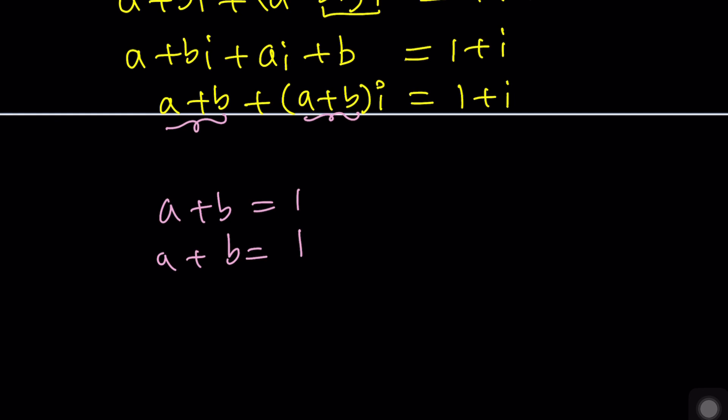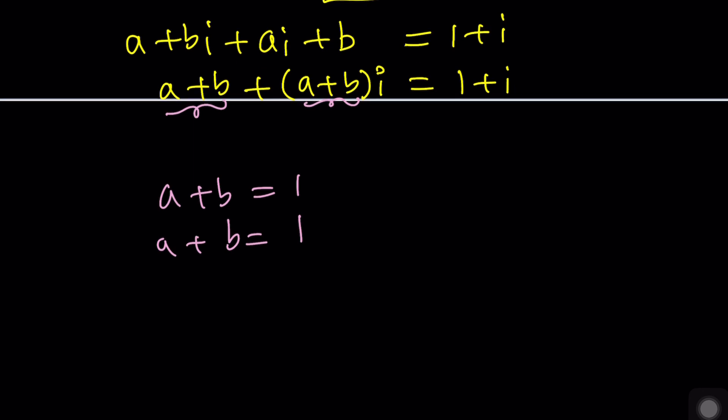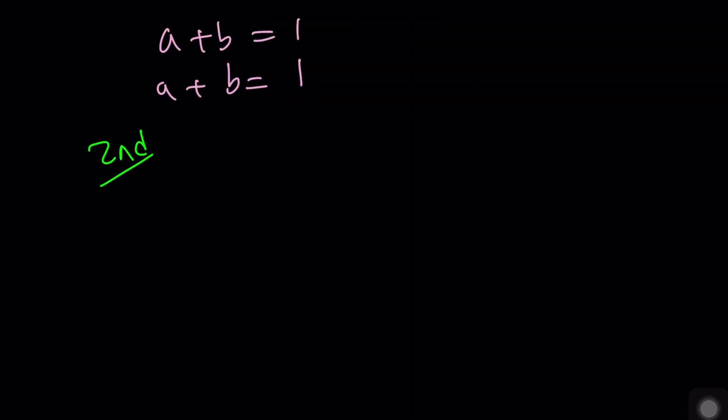Now here's the second concept — I mentioned I'd talk about two things. The second method involves conjugating both sides to generate another equation so we can solve as a system. If you have two complex numbers, conjugate their sum and you get the sum of the conjugates. This holds for subtraction, multiplication, division — all operations.